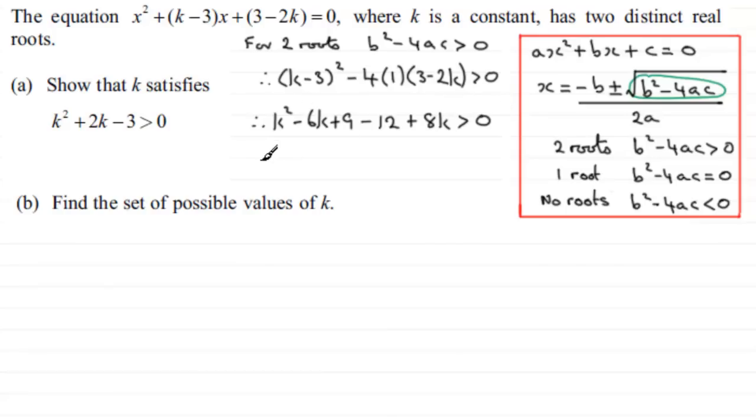So we've got k squared, and then we've got minus 6k plus 8k, which is plus 2k. And then we've got 9 minus 12, which is minus 3, and that is greater than 0. So we've shown that k satisfies that inequality.